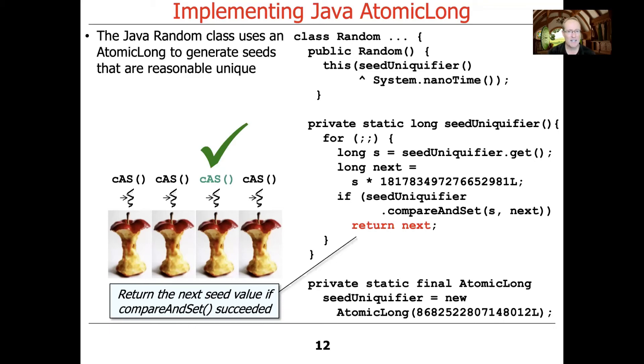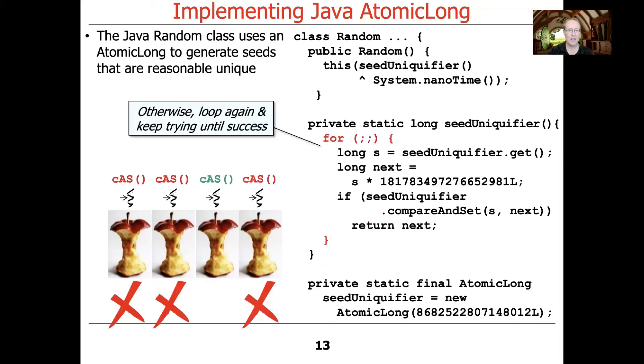And that way, the different threads that are calling the random number generator at the same time will all get different seed values that are unique. And we just keep doing that until it gets a unique seed value.